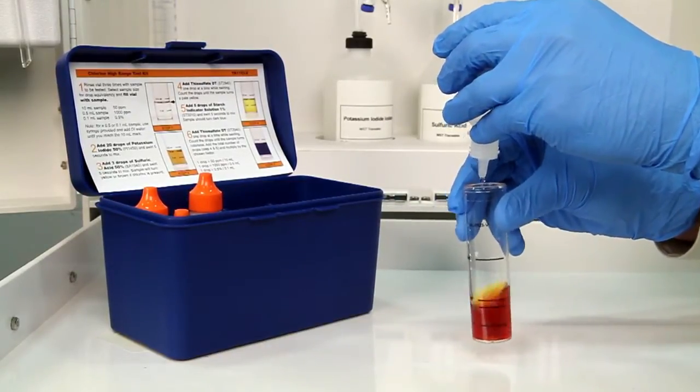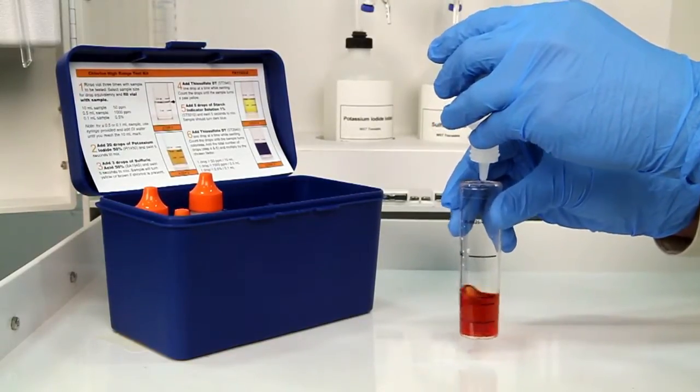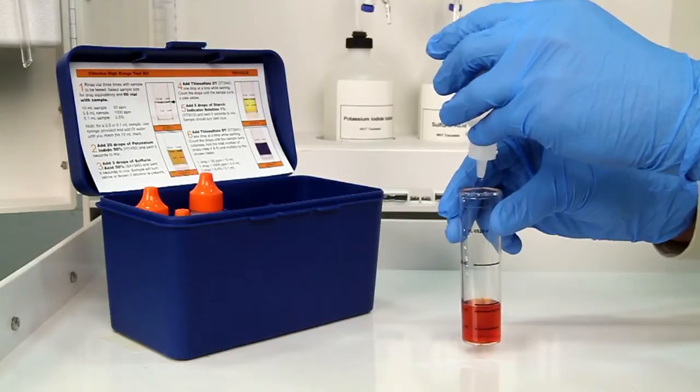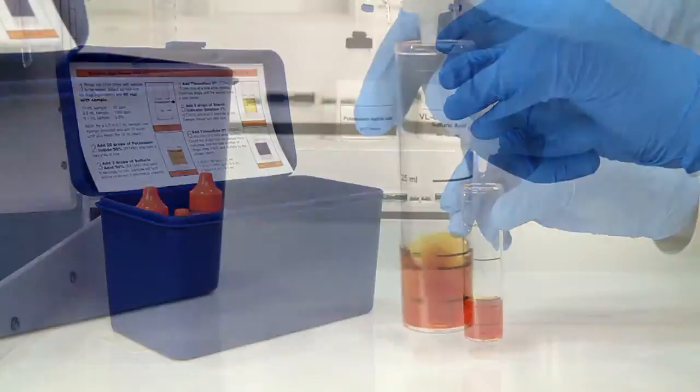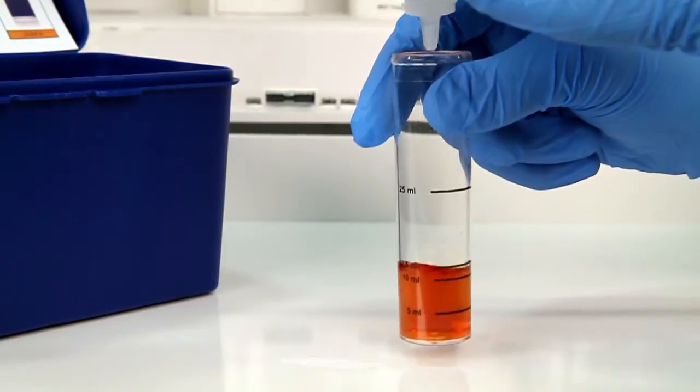The bottle contains a dropper tip, so it's important to hold the bottle vertically to get a consistent drop size. After the addition of each drop of titrant, swirl the vial to make sure the sample is properly mixed. Count the number of drops during this step.